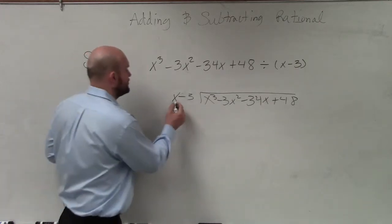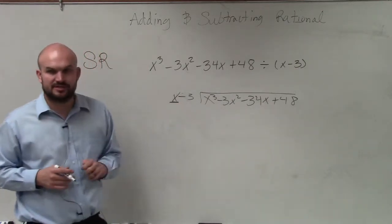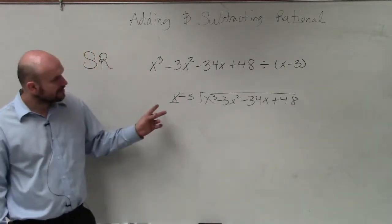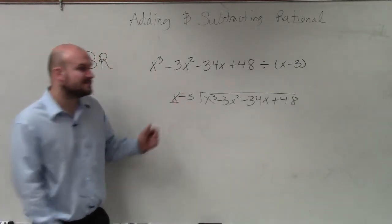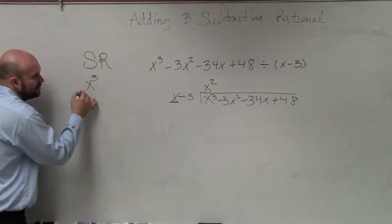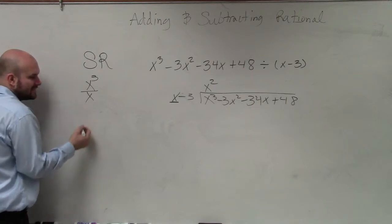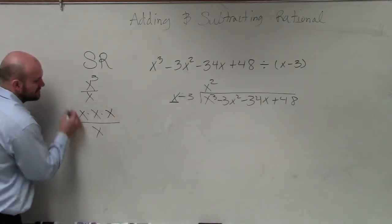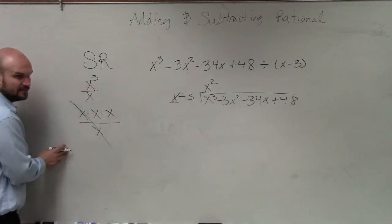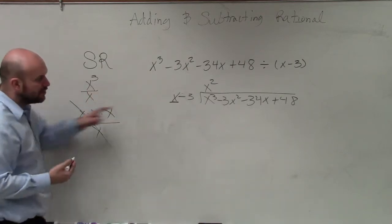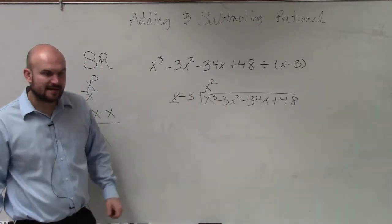Then I basically take my first term, and that's what I'm going to divide into each one of these terms. So I say x divides into x cubed x squared times. And again, think about it like this: x cubed over x. What's x cubed, guys? x times x times x divided by x just leaves you with x squared. Or you could use the rules of exponents to subtract them. So x divides into x cubed x squared times.